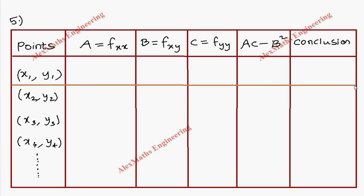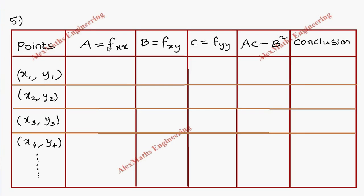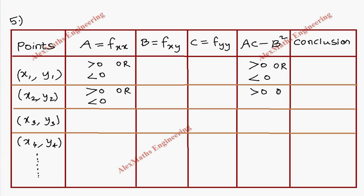For each stationary point, we substitute the coordinates into A, B, and C and check whether each value is greater than or less than zero. Then we substitute A, B, and C into the condition AC minus B squared and again check whether the result is greater than zero or less than zero. We repeat this process for every stationary point in the table.